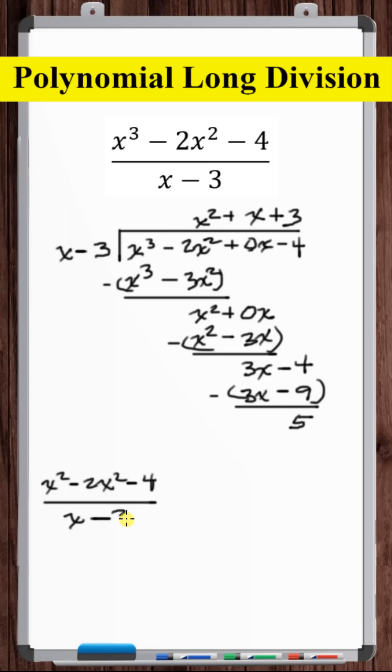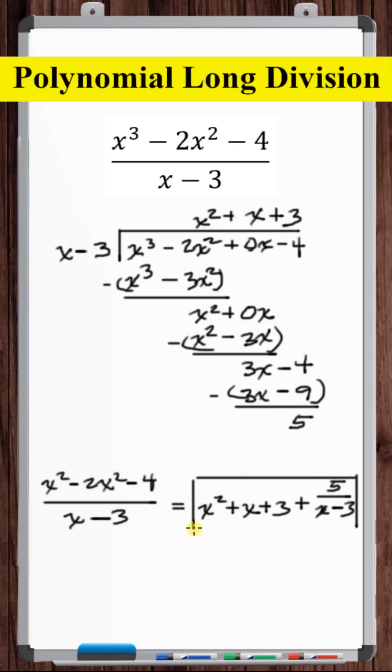Our final answer is x squared minus 3x plus 3, with a remainder of 5.